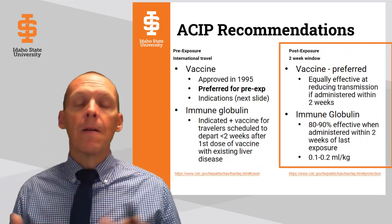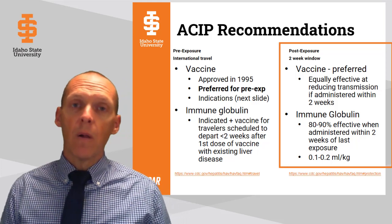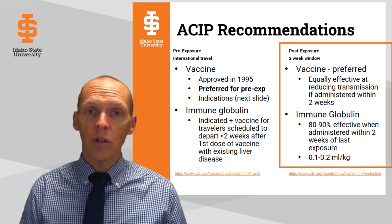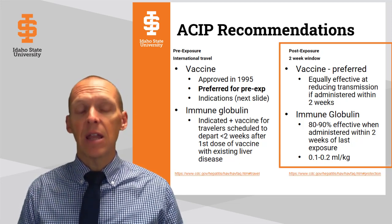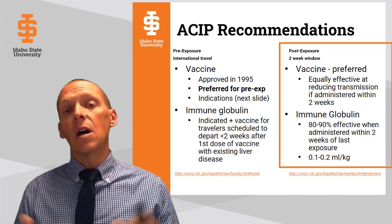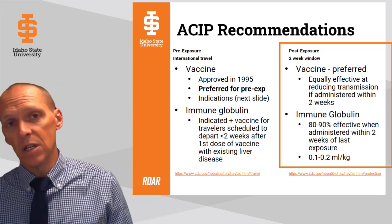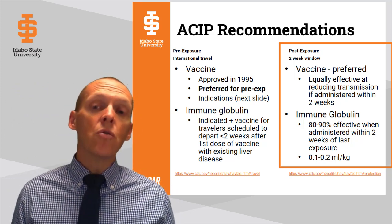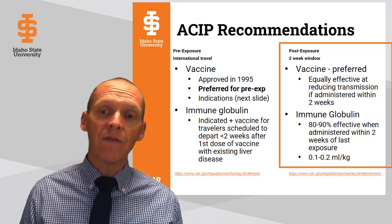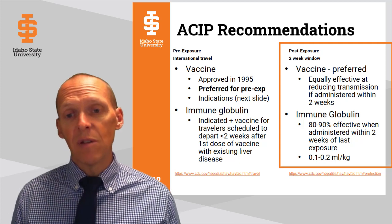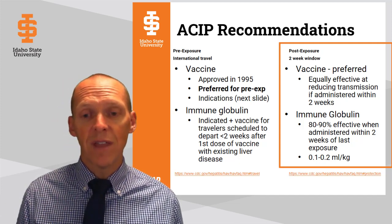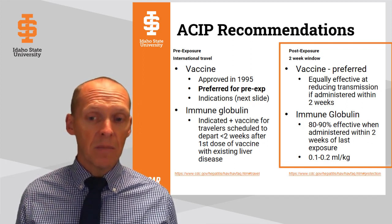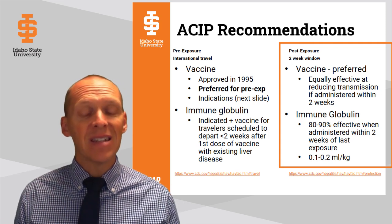Then there is post-exposure. For example, in an outbreak at a food service location, patients identified as having hepatitis A trigger a community notification. If you have eaten at this location in the past two weeks, you may be a candidate for a vaccine if you have not been vaccinated. Within two weeks of an exposure, individuals can receive the vaccine, which is extremely effective at reducing transmission if given within that two-week window. Individuals who may have a contraindication to the vaccine may use immune globulin, but the vaccine is preferred.